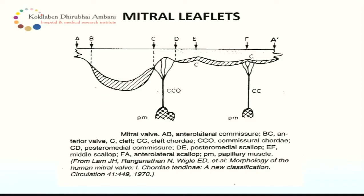This is a picture showing splitting of the leaflets and each component. Starting from A, the component between A and B is the anterolateral commissure; from B to C is the anterior leaflet or anterior valve; C to D is the posteromedial commissure; D to E is the posteromedial scallop or the first scallop of the posterior leaflet; E to F is the middle scallop; and F to A again is the anterolateral scallop. Papillary muscles and chordae are attached at the commissures.